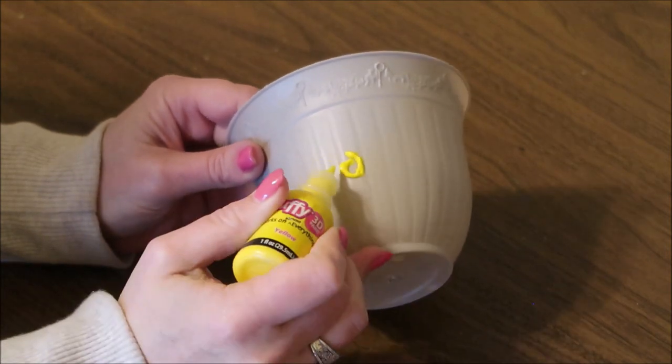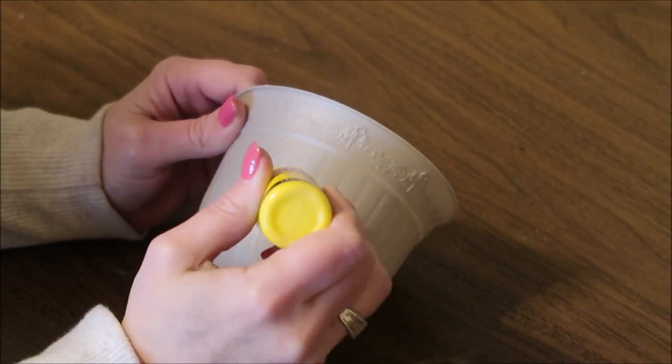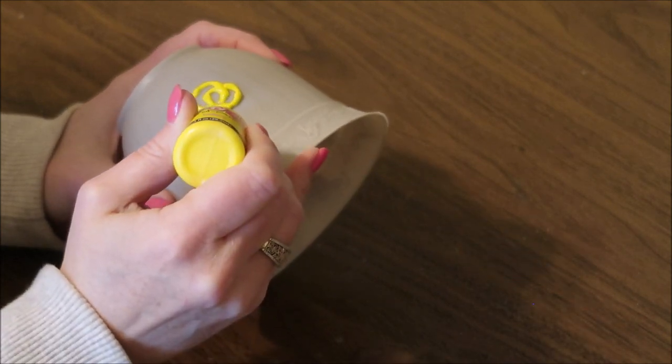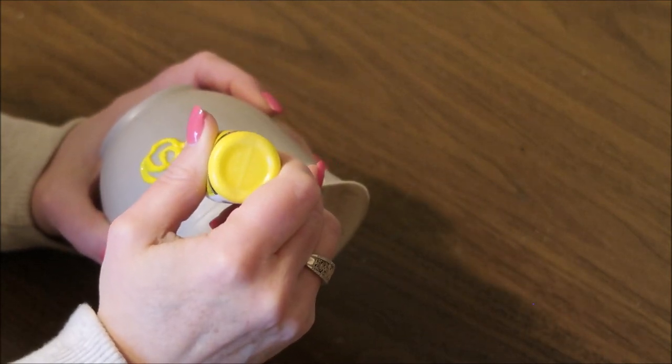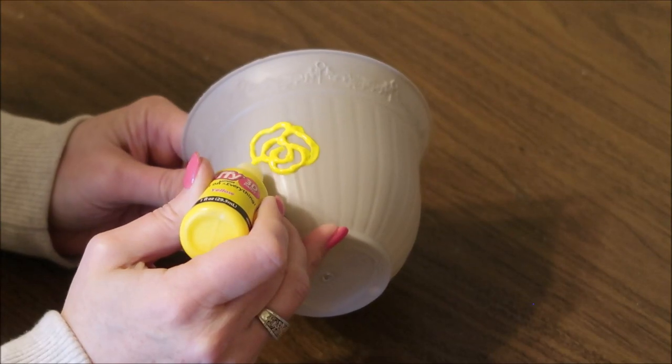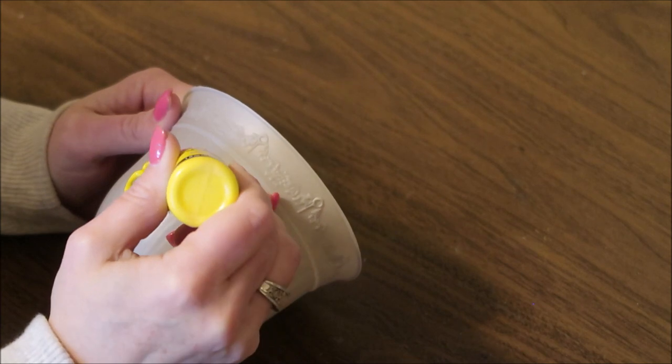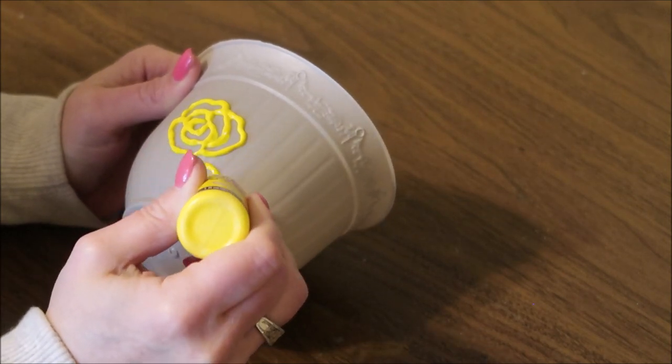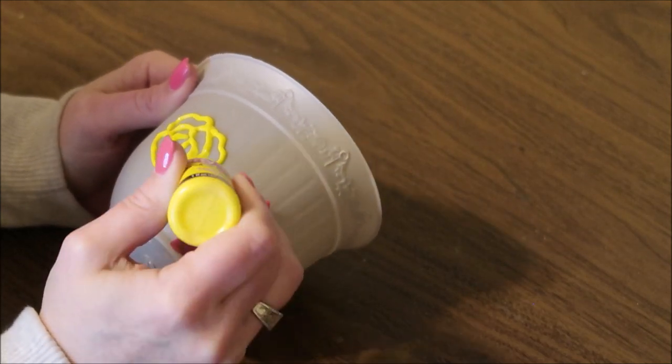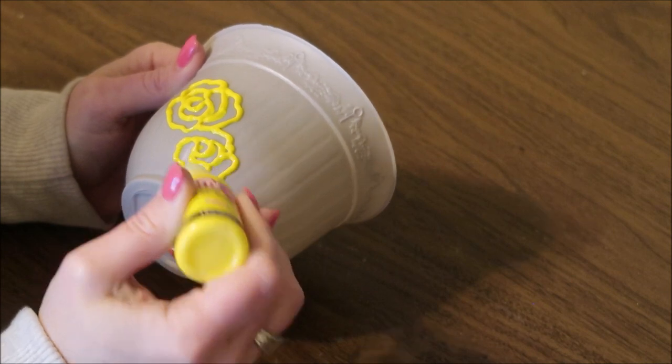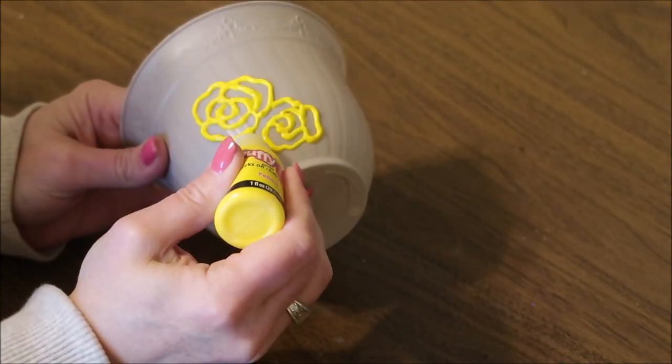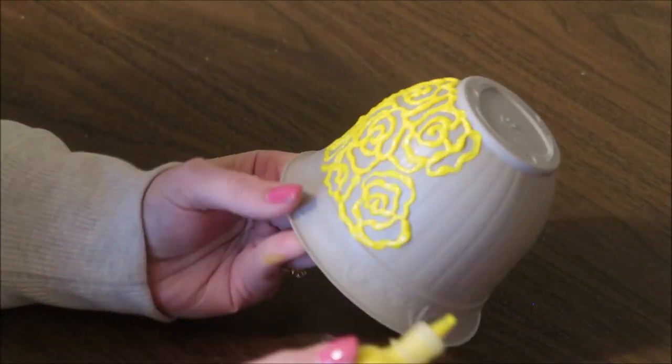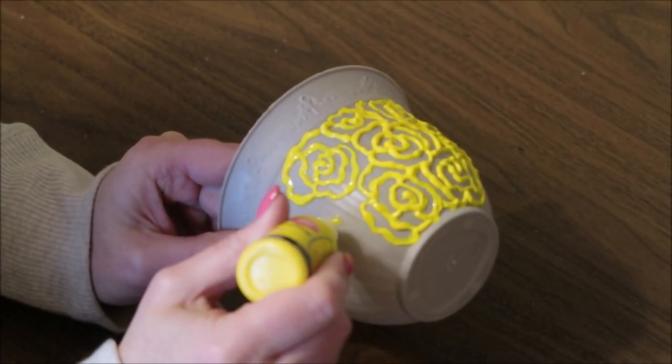If the pot you're using is pretty slick or smooth, you'll want to run some sandpaper over it. Then I'm taking the puffy paint and I'm just going to draw my design. This is a rose design that I saw on the Pottery Barn website that I'm recreating. I'm just free handing it. You could draw it out with a pencil first if you want and then follow that, but I decided to free hand it and see how it came out. When you're doing this, you want to make sure you're getting quite a bit of paint on the pot because you want a really good three-dimensional look. The paint does flatten out a little bit as it dries.